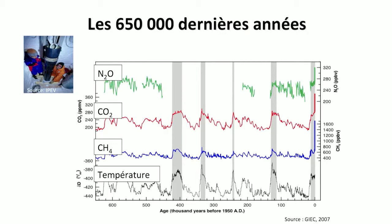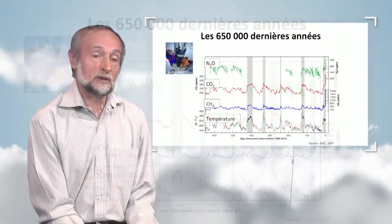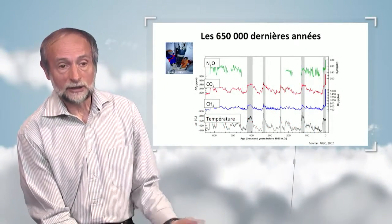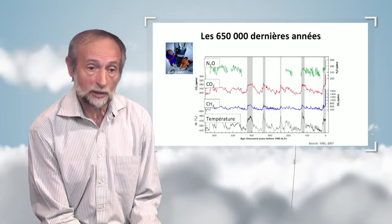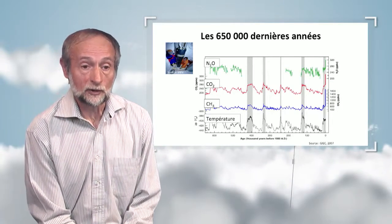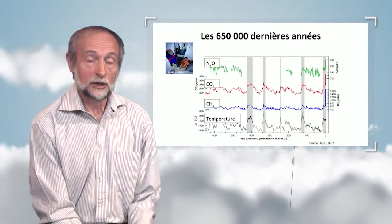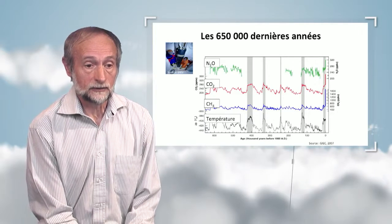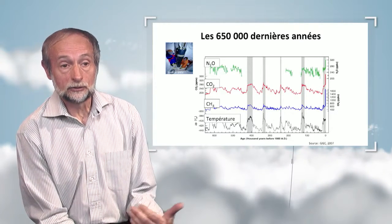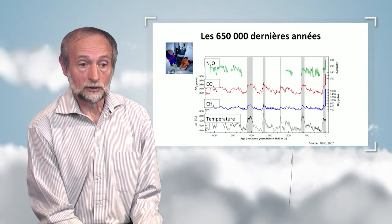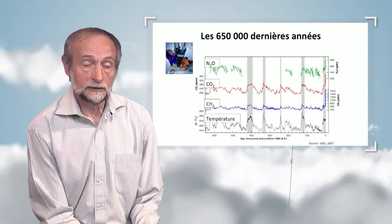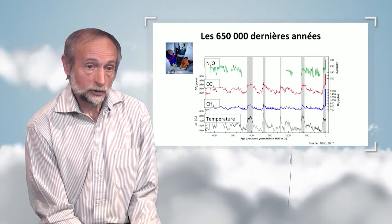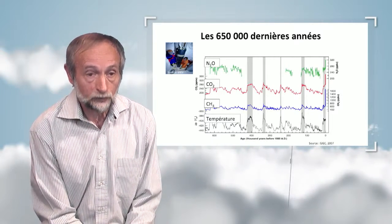The last glacial period was 21,000 years ago, with a much different climate and temperature from our period. The ice cap went down to Scotland, and the level of the oceans was 130 meters lower than it is nowadays. From the ice core drilling cores, we see that greenhouse gases — nitrous oxide, methane in blue, and CO2 — have evolved in time, and that warm periods were usually associated with higher concentrations.